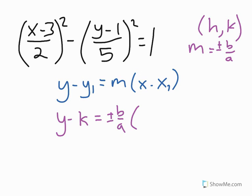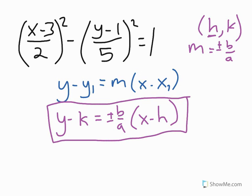And then the x doesn't change, but instead of x1, I'm going to put the other half of our center point, which is h. So this equation right here will always give you, or this formula I should say right here, will always give you the equation of the asymptote for any hyperbola.